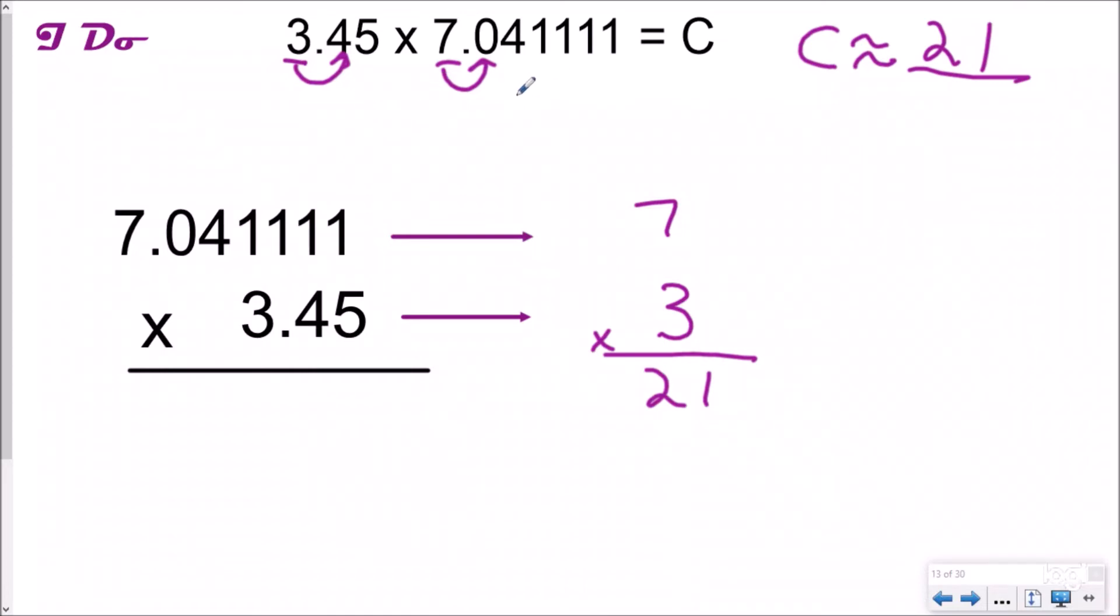So now when I go back and solve for C exactly, which you can check out video four in our multiplying decimal playlist to really learn how to do that, my answer should be around 21. If I get 21,000, then I did something wrong. If I get 200,000, my answer can't be reasonable because my estimate was 21.